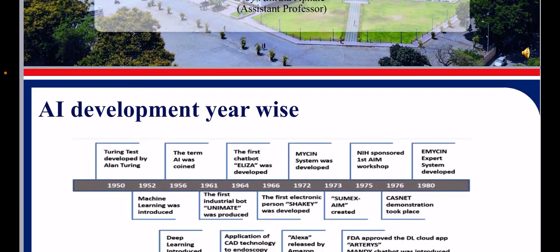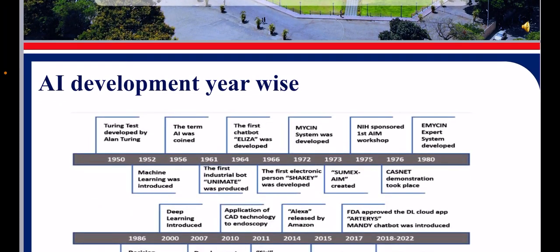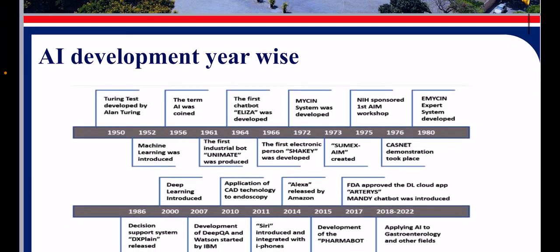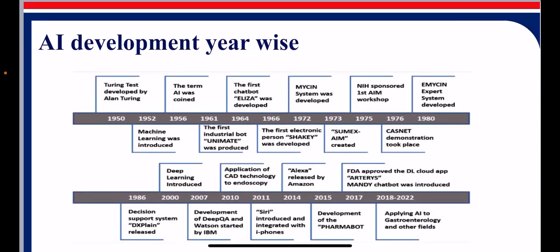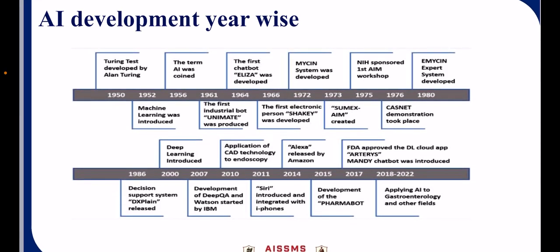Before we go into unsupervised learning, we should know how AI got developed year-wise, from 1952 till date. The major development in AI occurs after 2010, as you can see from the growth of AI.